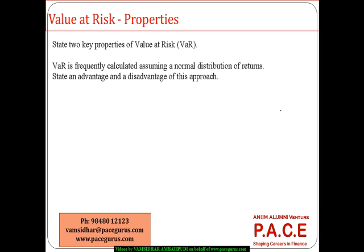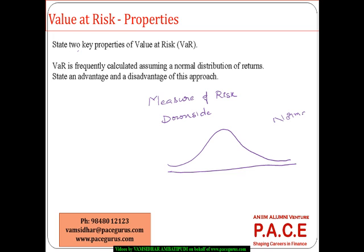On a conceptual note, Value at Risk (VaR) is a measure of investment risk — or for that matter any kind of risk — where the focus is on the downside risk. To a large extent it assumes that the output, meaning the returns, follows a kind of a normal distribution. What it talks about is the potential minimum loss that can occur over a given time period — daily, monthly, weekly — with a given level of confidence.